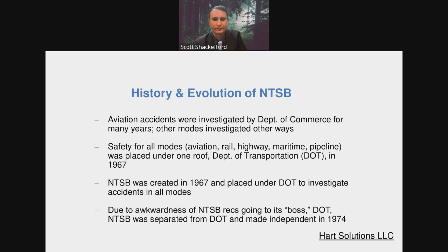Since more recommendations go to the regulator than to any other entity in any transportation industry, having the NTSB inside DOT was clearly awkward. So NTSB was made completely independent — it no longer reports to DOT but basically reports to Congress. That was a key lesson learned: if you make recommendations to your boss, that just isn't going to work. That's why the NTSB was separated and made independent in 1974.